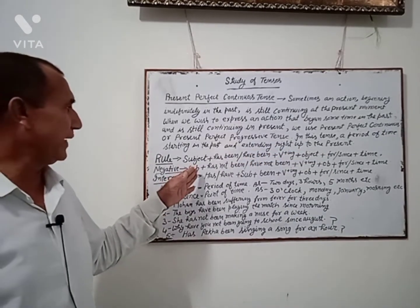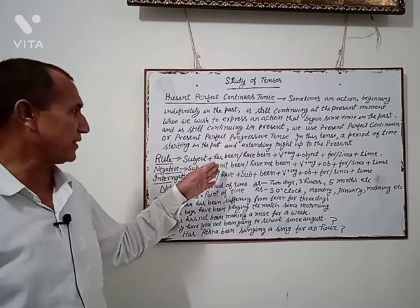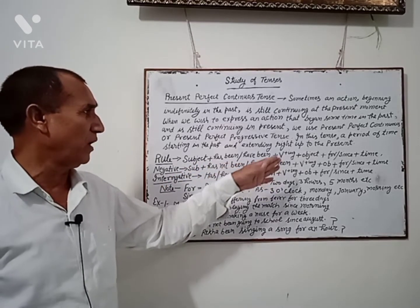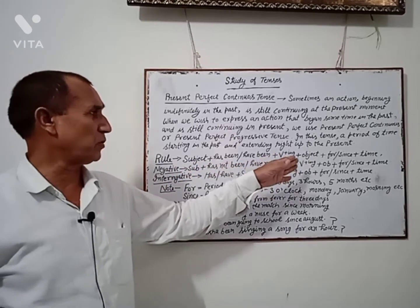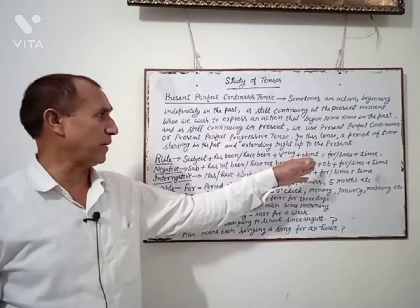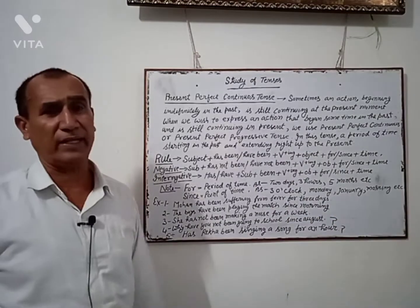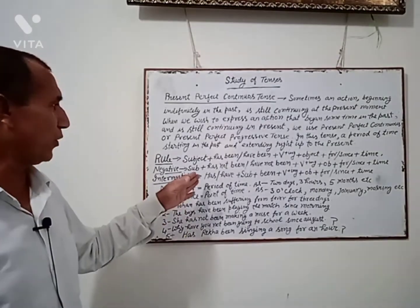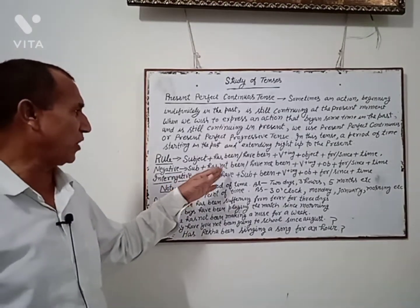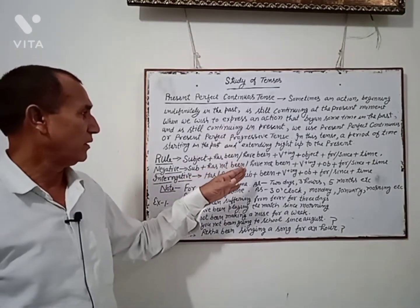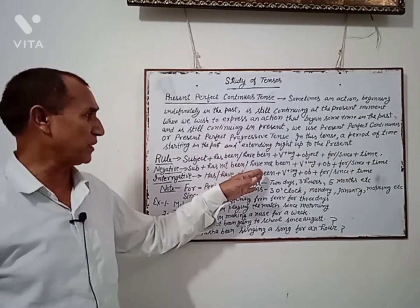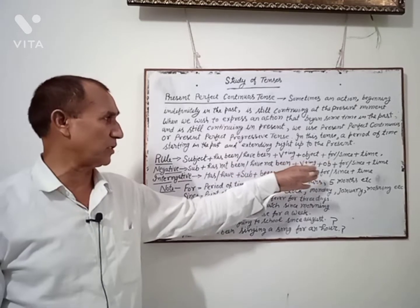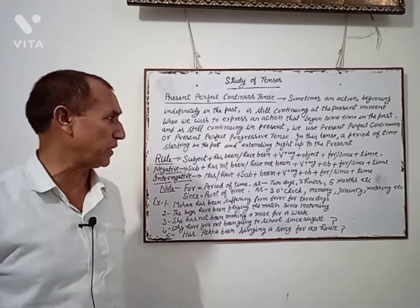In negative: Subject + has not been / have not been + V-ing + Object + for/since + time. In interrogative: Has/Have + Subject + been + V-ing + Object + for/since + time.